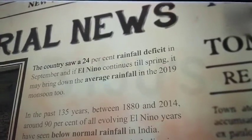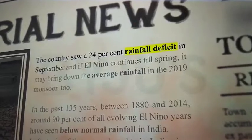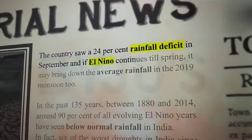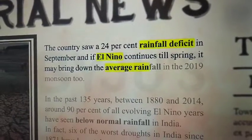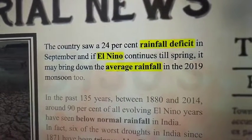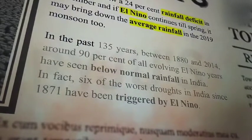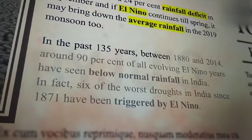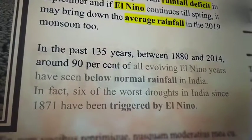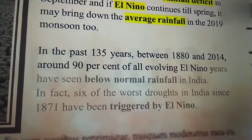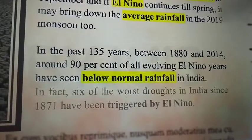The country saw a 24% rainfall deficit in September and if El Niño continues till spring, it may bring down the average rainfall in the 2019 monsoon too. In the past 135 years, between 1880 and 2014, around 90% of all evolving El Niño years have seen below normal rainfall in India.